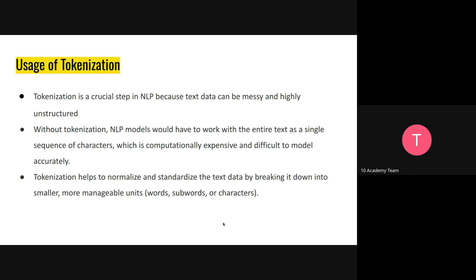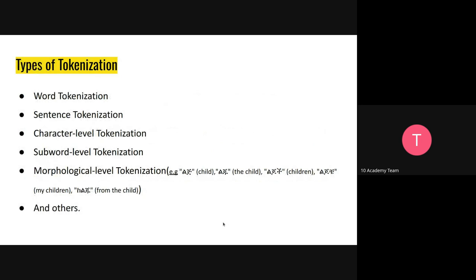Passing the entire text to a model is not recommended — it could be very expensive and difficult for the model to understand the raw data as it is. So it's better to involve tokenization on our data when we decide to pass it to a model to fine-tune or train it. Tokenization helps to normalize and standardize text data by breaking it down into smaller, more manageable units that the modeling algorithm can understand much better.